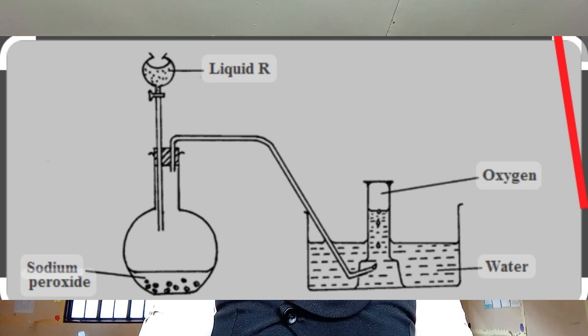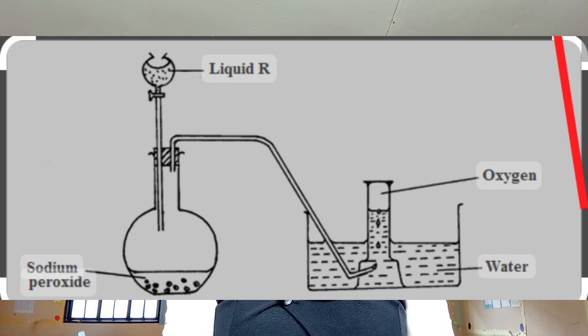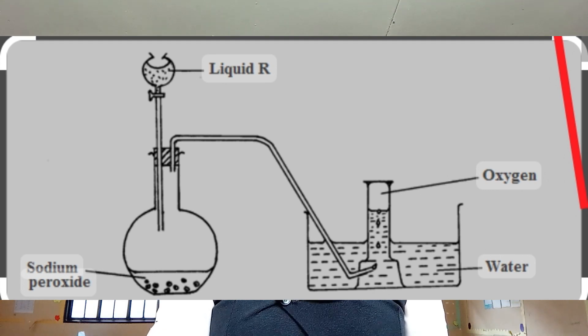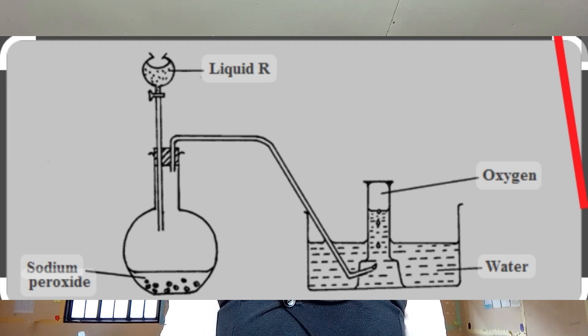Another method of preparation of oxygen gas is adding water to sodium peroxide. So sodium peroxide plus water gives you sodium hydroxide plus oxygen gas.